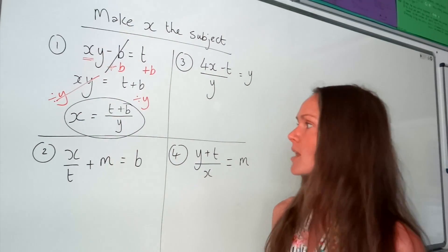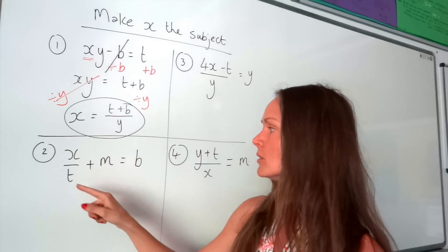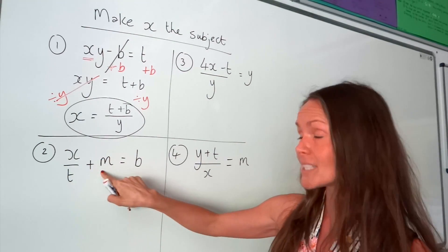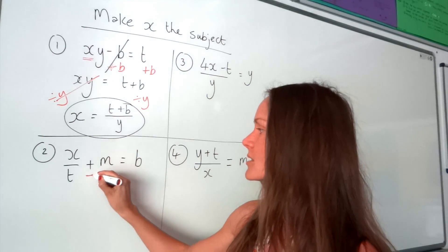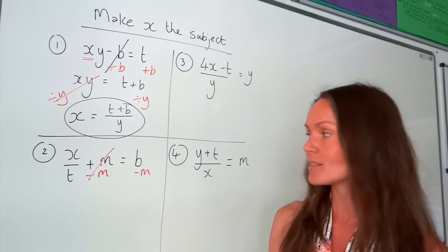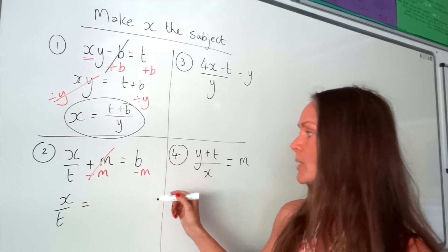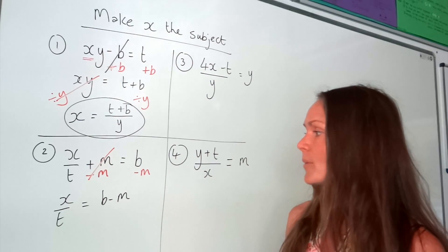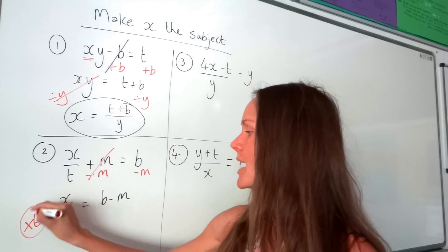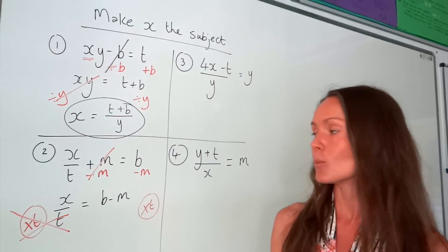On to number 2. This time it's a bit different because we've got a fraction. Remember, leave whatever's closest to x for the moment. So we're going to get rid of this plus n — we need to subtract n and remember to do the same thing on both sides. On the left-hand side, they just cancel because that goes to 0, so we're left with x over t. On the right-hand side, b minus n is just b minus n. The final step: x is being divided by t, so the reverse is to multiply by t. The side where you do the opposite cancels, so we're just left with 1x.